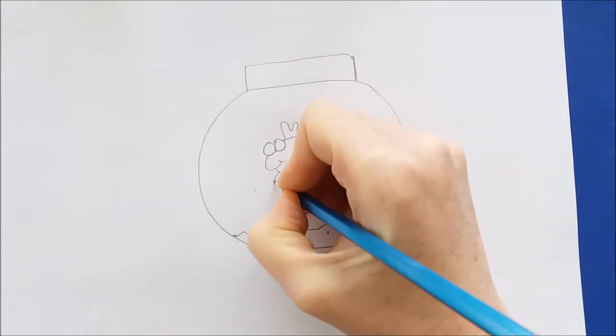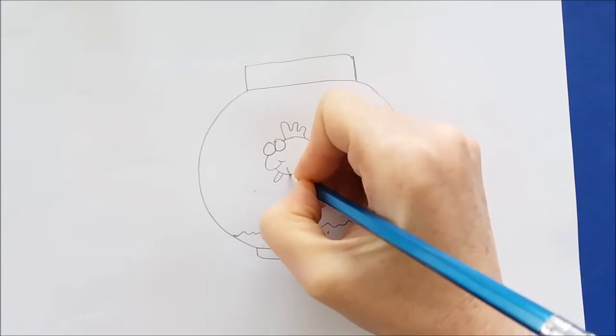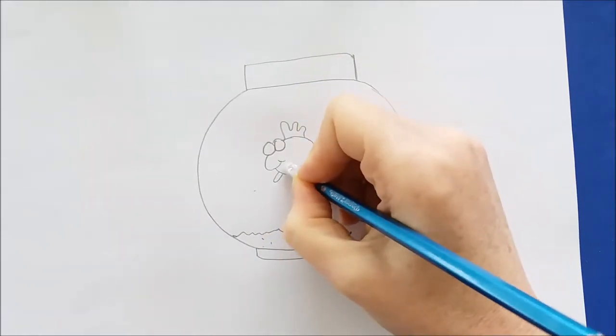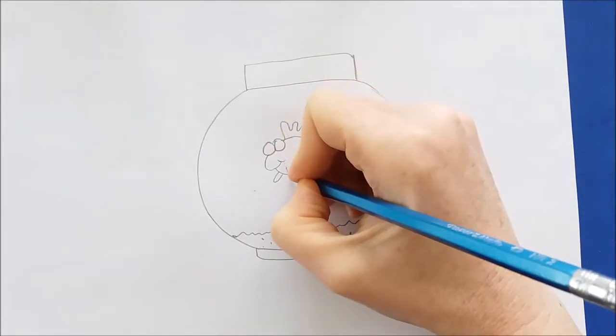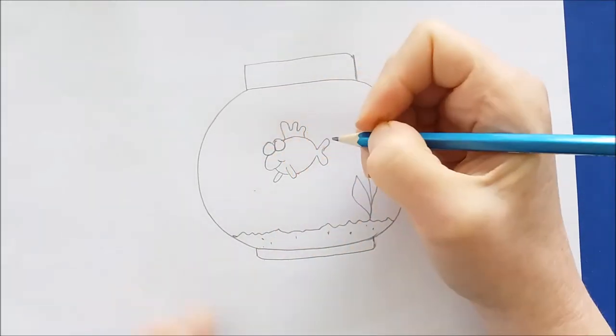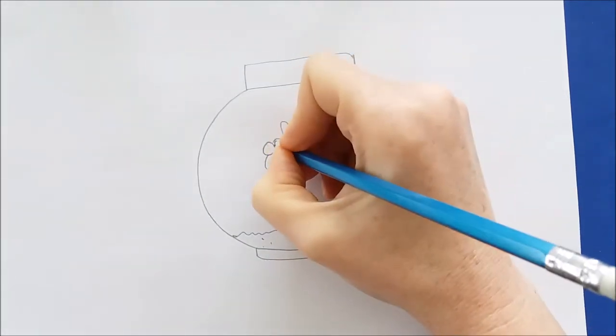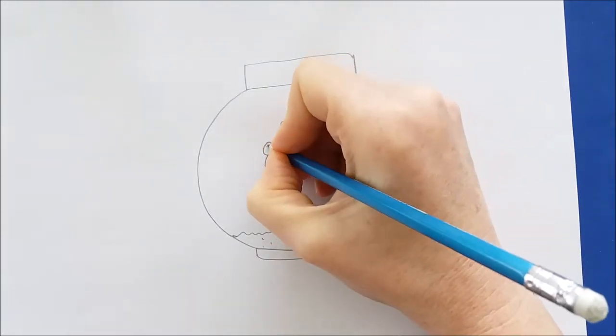And then two little U-shapes that stick out for the bottom swimmer fins. And there we have both of his swimmer fins. I'll put two little dots inside of the circle for his eyes.